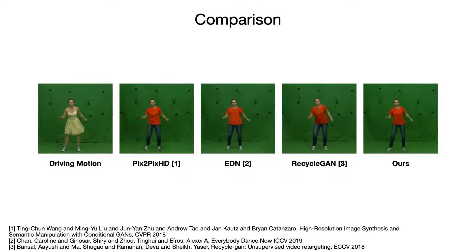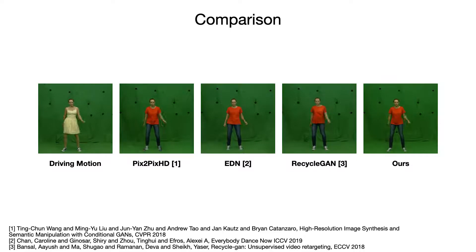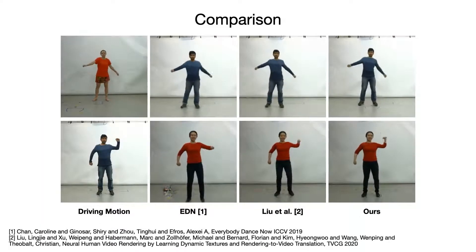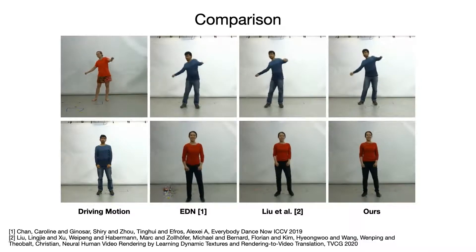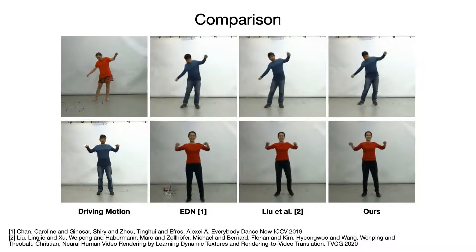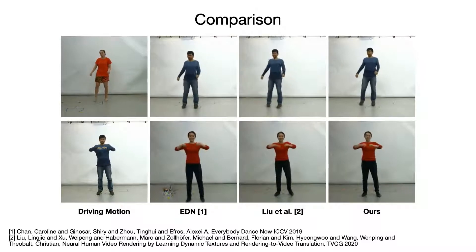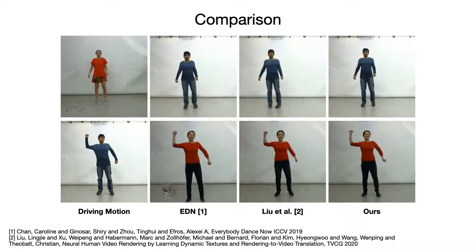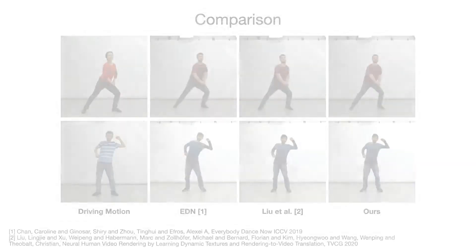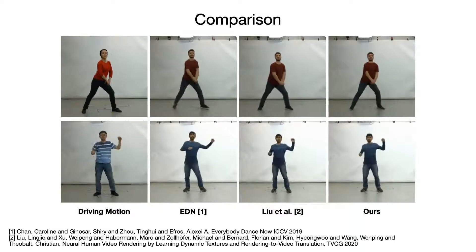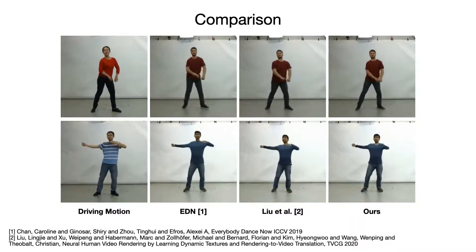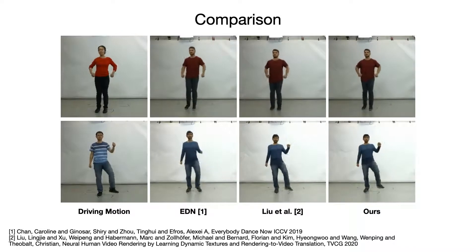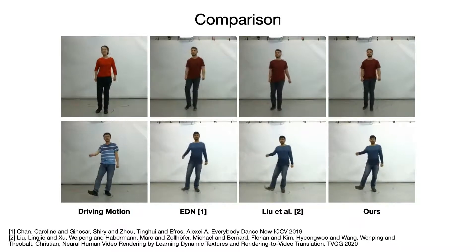These findings are also supported by a perceptual experiment, which reveals that the majority of users prefer our results in terms of clothing and overall video realism. Here we show results on the dataset of Liu and colleagues, who perform motion transfer using a pre-captured template mesh, which requires a recording of a static actor, mesh reconstruction with structure for motion, and delicate post-processing. Our method, on the other hand, only requires a monocular training video and achieves comparable quality, while outperforming recent video-based performance cloning methods such as EverybodyDanceNow.